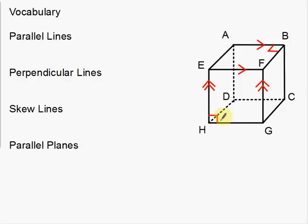Down in the corner by H, that's a right angle — a 90 degree angle. Same thing up here with B; this is also a 90 degree angle. It doesn't quite look the same because with a three-dimensional object we're looking at the top of this cube, so it's skewed just a little bit. But it still means a 90 degree angle just like the one down there.